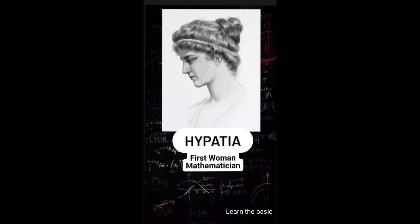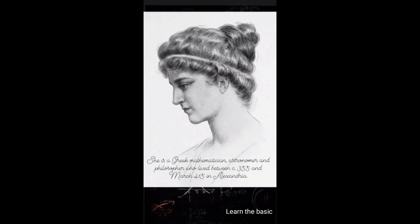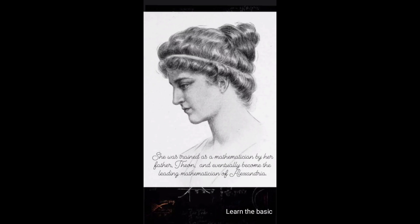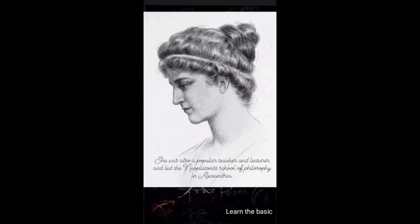Women are awesome not only today, but even in the past. You are actually facing Hypatia, the first woman mathematician in history. She is a Greek mathematician, astronomer, and philosopher who lived between approximately 355 and March 415 in Alexandria. She was trained as a mathematician by her father, and eventually became the leading mathematician of Alexandria. She was a popular teacher and lecturer, and led the Neoplatonist school of philosophy in Alexandria.